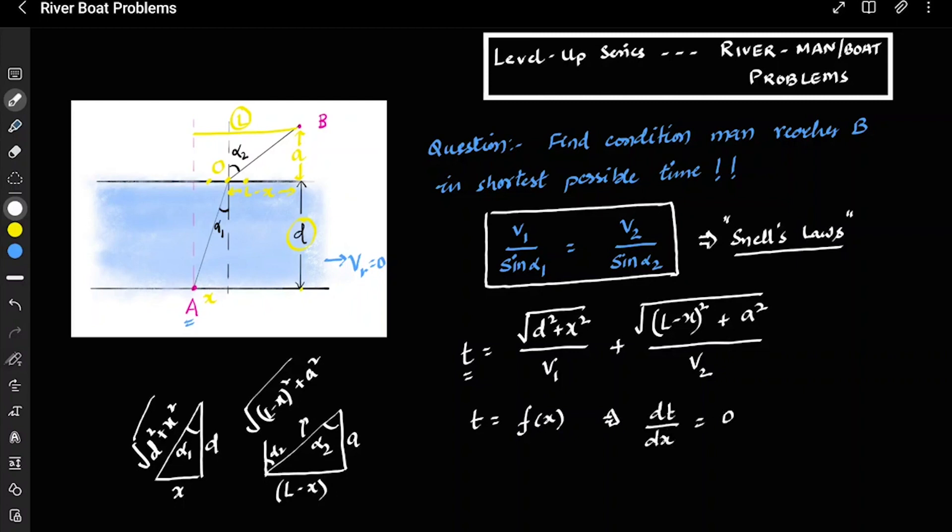So clearly this time is a function of x, and if time is a function of x, I can find shortest possible time dt by dx and equate it to equal to 0. So clearly I can use dt by dx equal to 0. If I do that, what will happen?